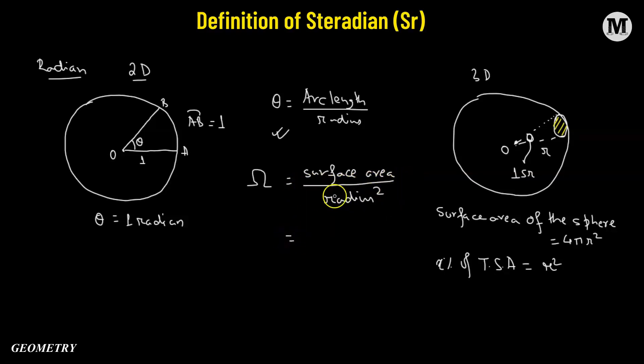So we are in three dimensions. Now, what's the surface area? We are considering the x percentage of the total surface area, such that its value is R², and we have radius squared in the denominator. So this is giving us a factor of one. So this is actually one steradian. This is how we define a steradian.